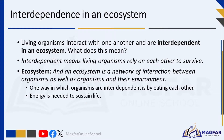Living organisms interact with one another and are interdependent in an ecosystem. Interdependent means living organisms rely on each other to survive. An ecosystem is a network of interaction between organisms as well as organisms and their environment. One way in which organisms are interdependent is by eating each other. For example, the buck eats the grass and the lion eats the buck. The interactions and interdependence between organisms in an ecosystem is driven by the need for energy.